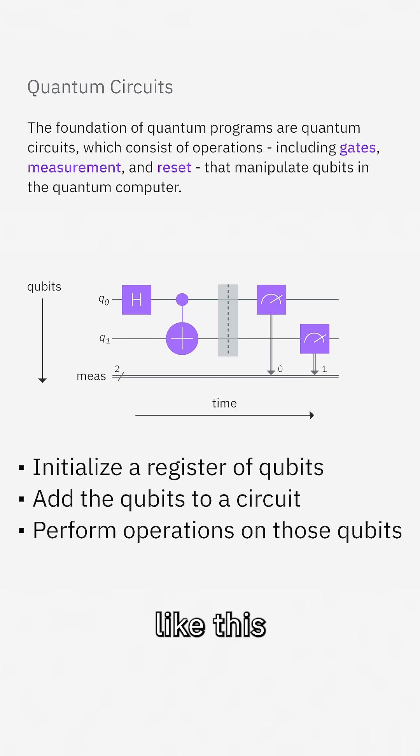Multiple qubit gates, like this CNOT, affect two or more qubits linked by the gate. Here in this example, the state of qubit 1 changes depending on what the state of qubit 0 is in.